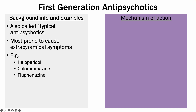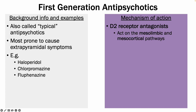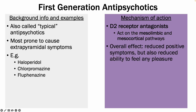In terms of their mechanism of action, they are D2 receptor antagonists, and they act on the mesolimbic and mesocortical pathways. Their overall effect is that they reduce positive symptoms, but also reduce the ability to feel any pleasure by blocking the mesolimbic pathway, and they increase negative symptoms by blocking the mesocortical pathway.